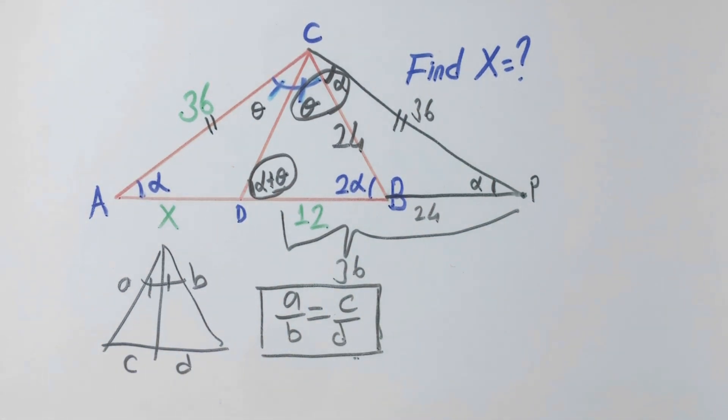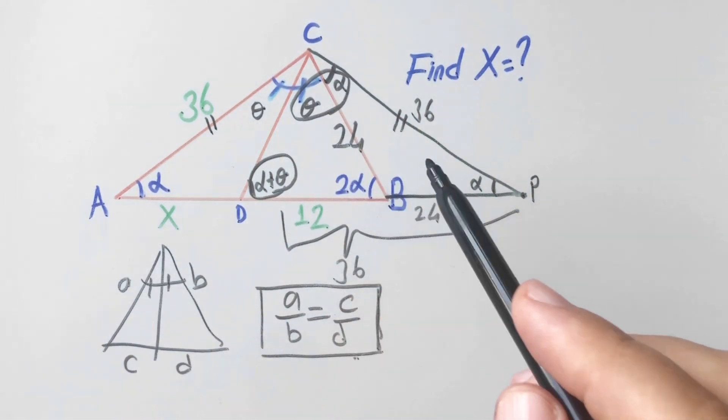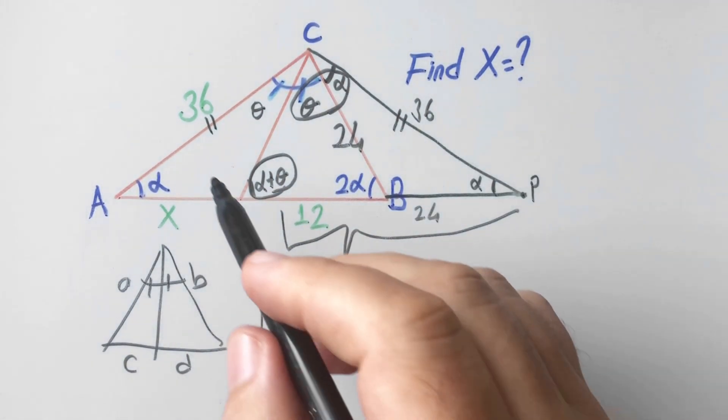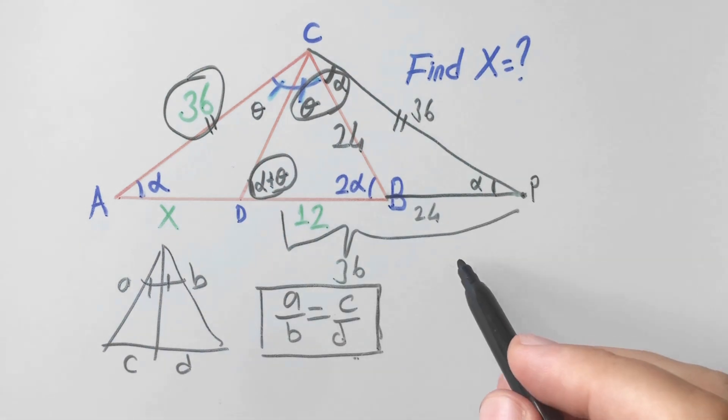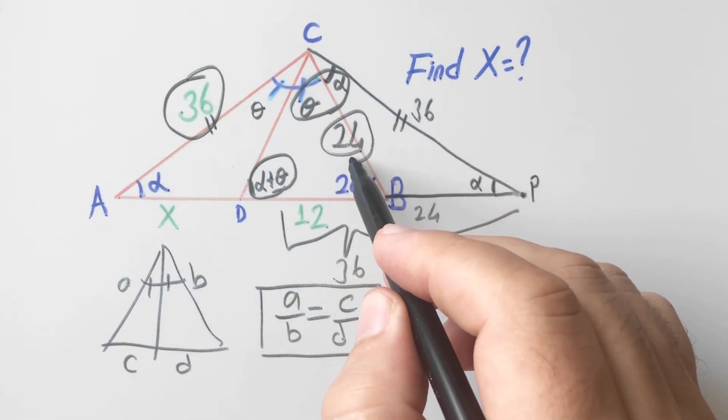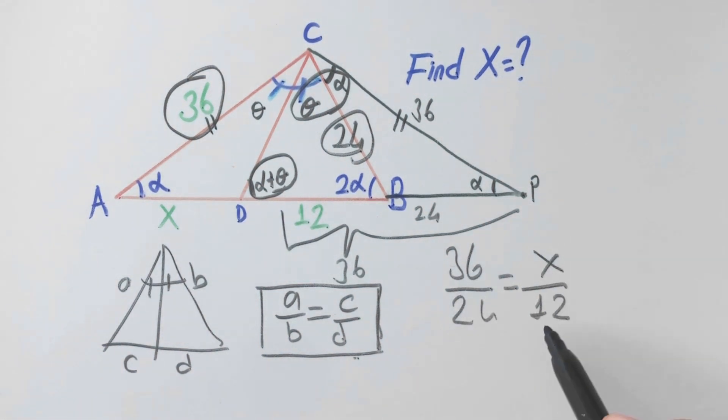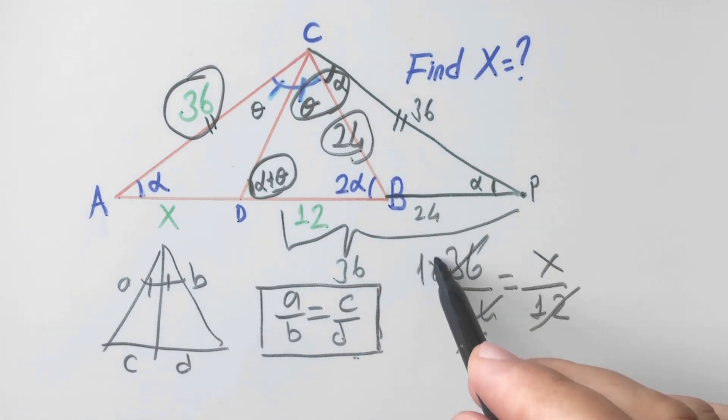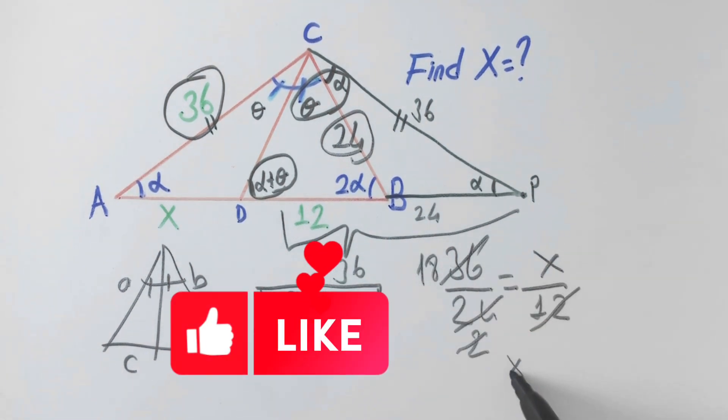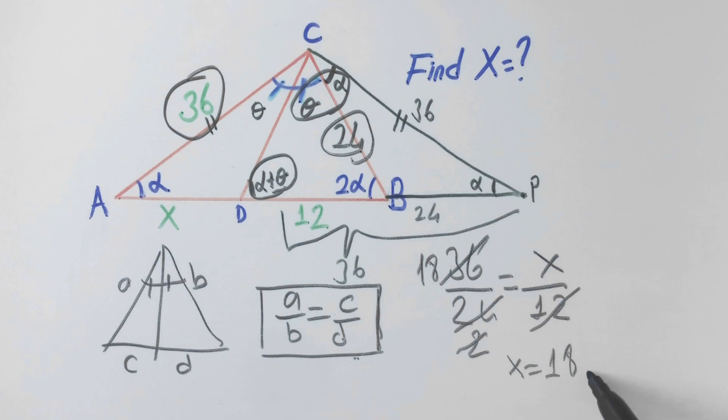So if we apply this theorem in triangle ACB, this length over this length is equal to x over 12. If you simplify the equation, x is going to be 18 units.